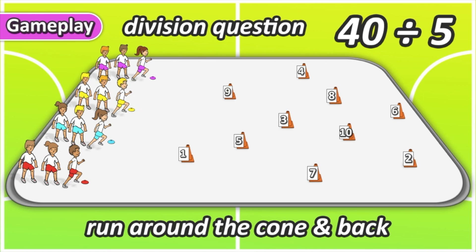Your teacher might give out different points for the team that comes first, second, third, and fourth — that's up to your teacher and your class. Once you've had your go, you head to the back of the line and the next player in your team gets ready to go.